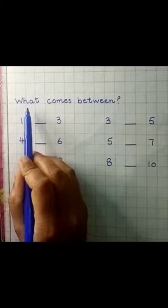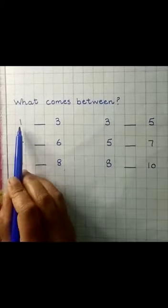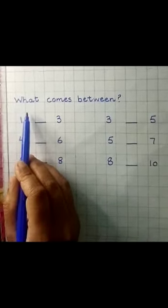Draw a margin line and write down this headline: what comes between. After this headline, you have to leave one block near the margin line.